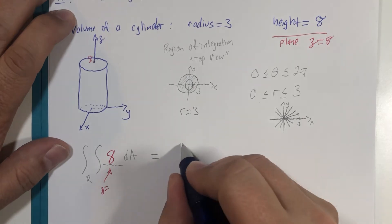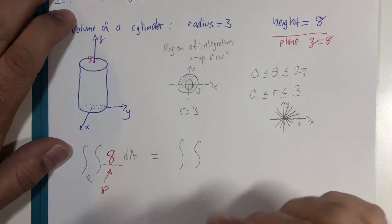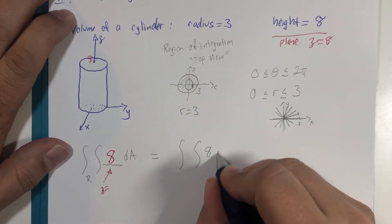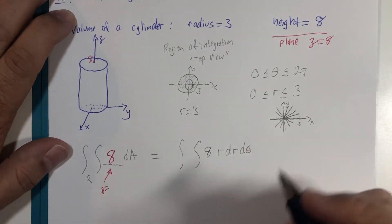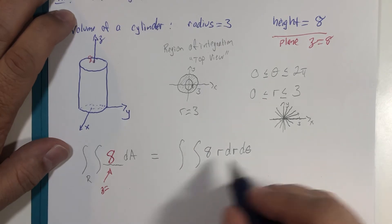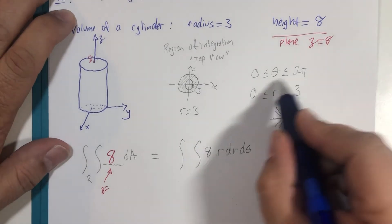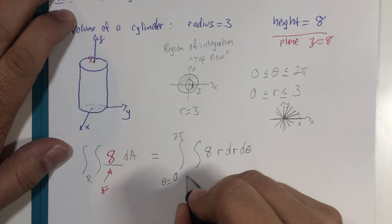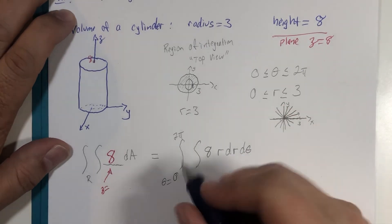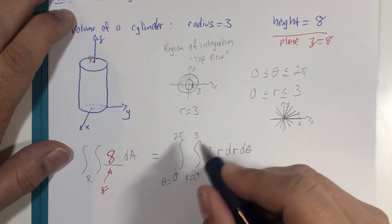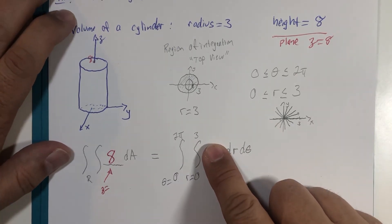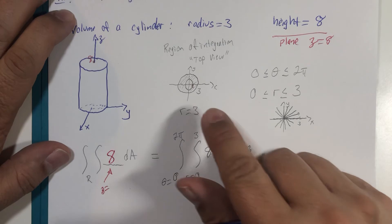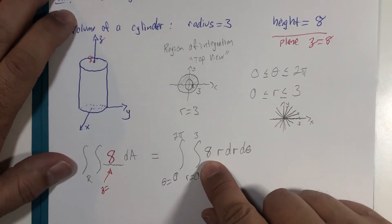When we convert, there are no XY values in the height, so it stays 8. But dA can be rewritten as r multiplied by dr dθ, as shown in the previous video. Our theta values — the constants at the end — go from 0 to 2π. Our r values vary from 0 to 3. These boundaries take care of the entire circle inside the region, from radius 0 to 3, all the way around. And then this is the third dimension from 0 to 8.